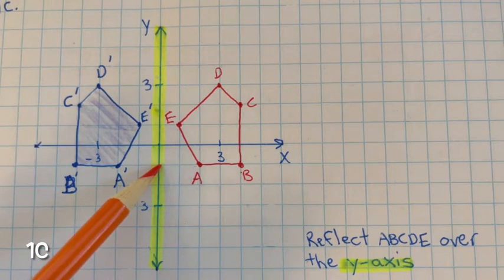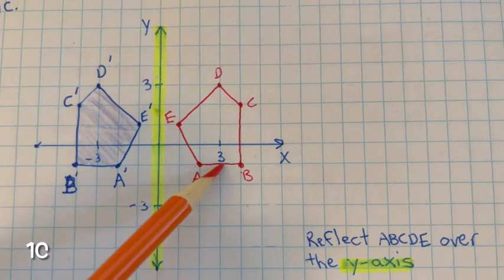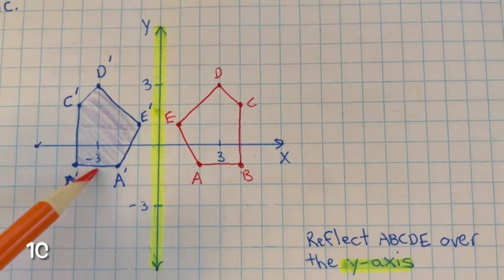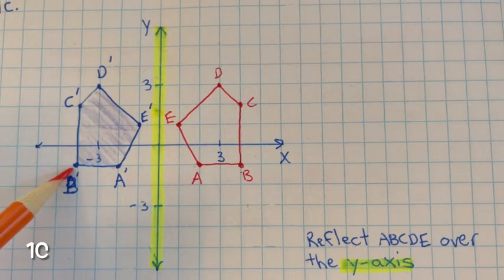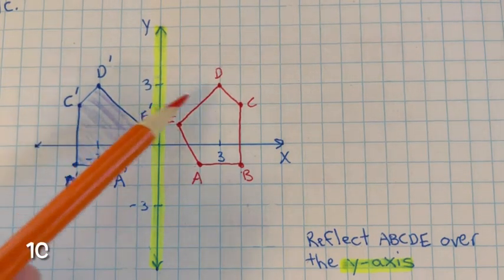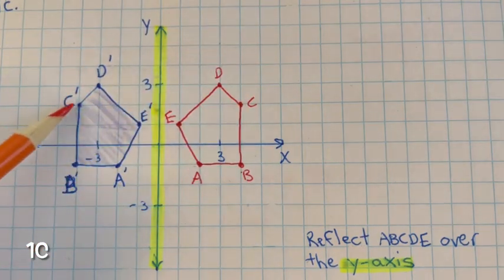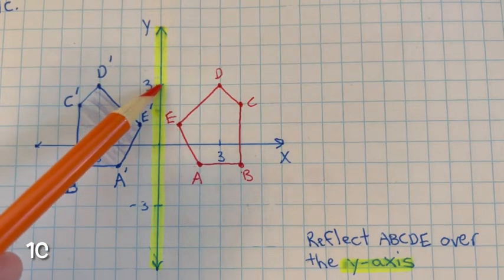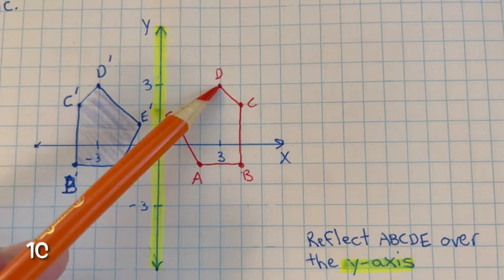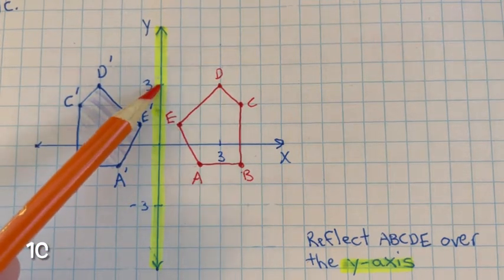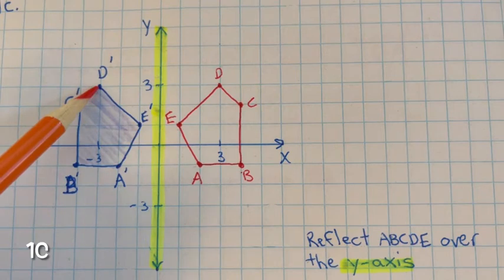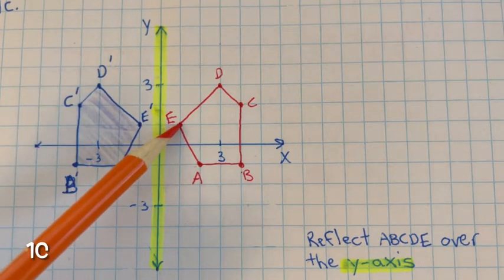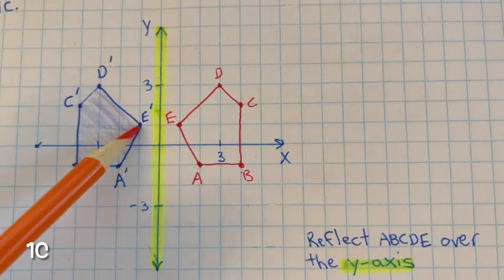From the line of reflection: b is 4 units to the right, so b prime is 4 units to the left. C is 4 units to the right, so c prime is 4 units to the left. D is 3 units to the right from the line of reflection, so d prime is 3 units to the left. E is 1 unit to the right, so e prime is 1 unit to the left.